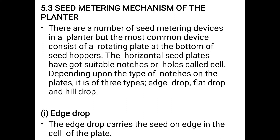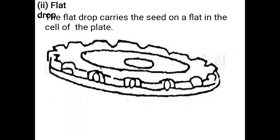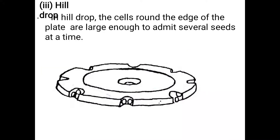The edge drop carries the seed on edge in the cell of the plate. This is the edge drop plate used in the planter for the seed metering mechanism. The flat drop carries the seed on flat in the cell of the plate. This is the flat section which carries seeds on flat drop. In hill drop, cells around the edge of the plate are large enough to admit several seeds at a single time.